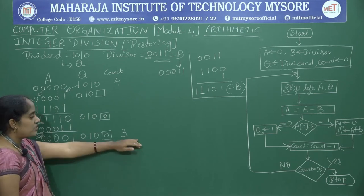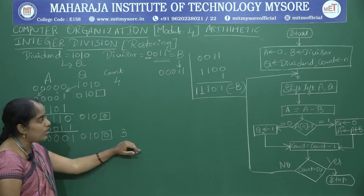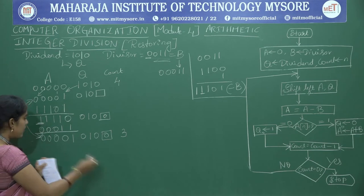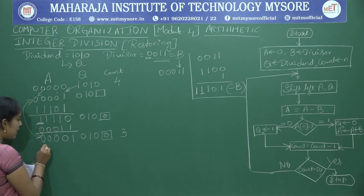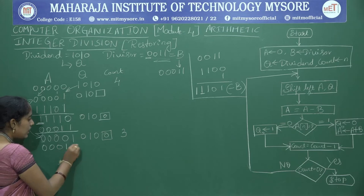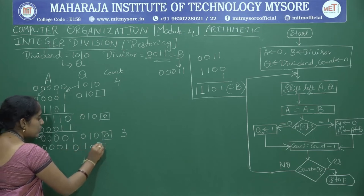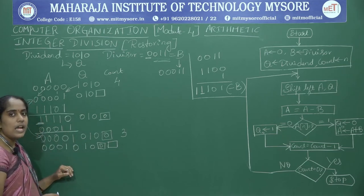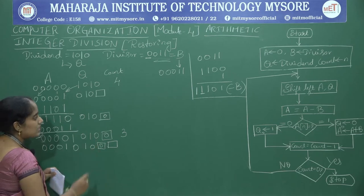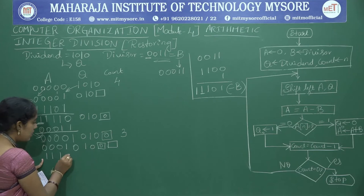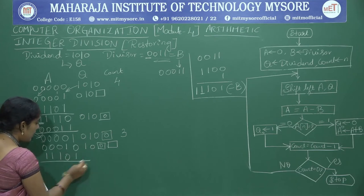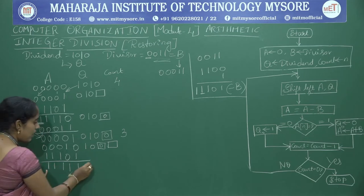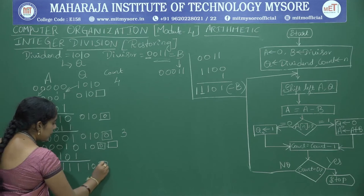Count is 3, not equal to 0, so go back to step 3. Shift left: A becomes 00010 and Q becomes 100 with blank. Next, A equals A minus B: add 11101 to 00010, giving 11111, with Q showing 100 and blank.